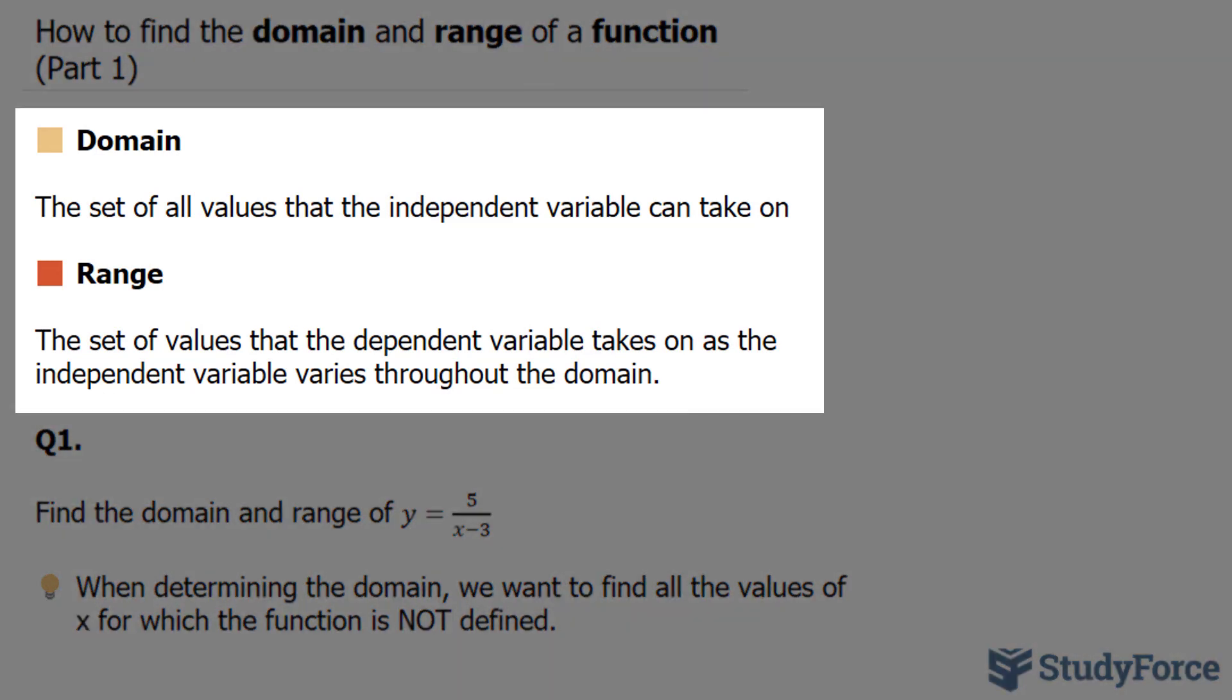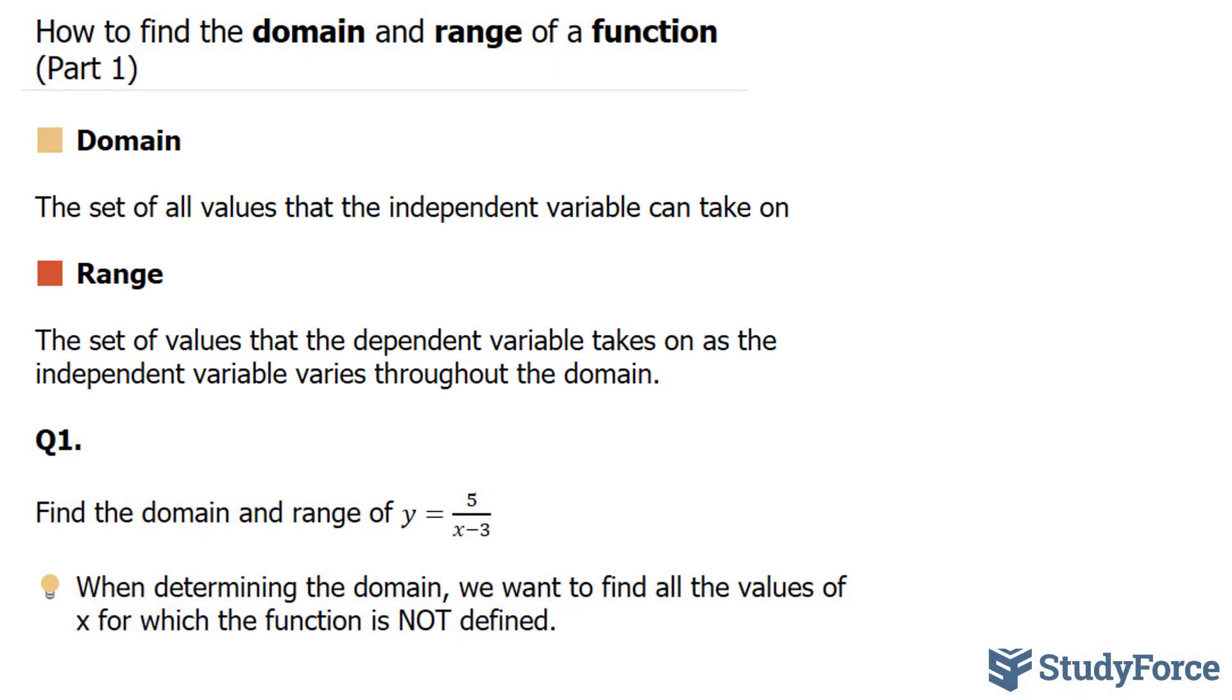The domain is the set of all values that the independent variable can take on, and usually we assign the independent variable as our x. The range is the set of values that the dependent variable, y, takes on as the independent variable varies throughout the domain. And this is usually the trickier of the two to find.